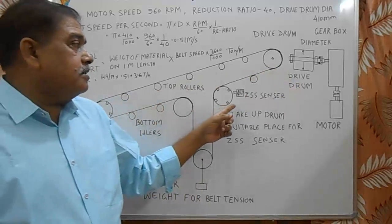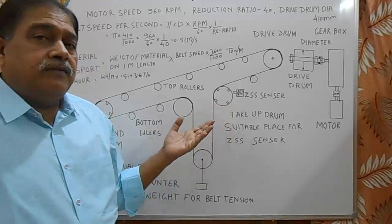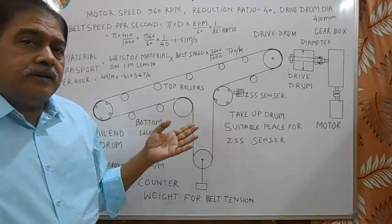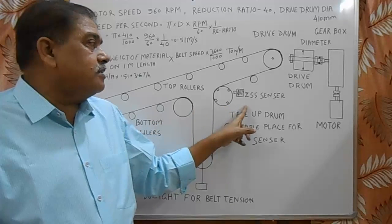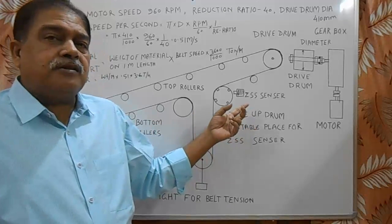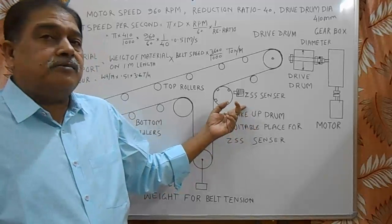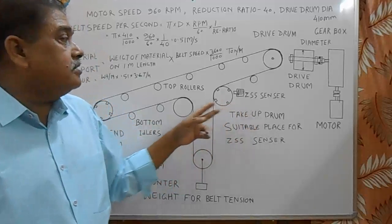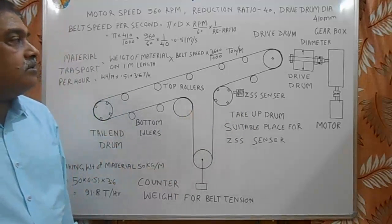This ZSS is used to sense speed of belt. Whenever the speed of belt decreases below 75% of speed, this ZSS gives a signal that belt speed is slow or belt is snapped out. In addition to these, various safety devices are also used in belt conveyor.